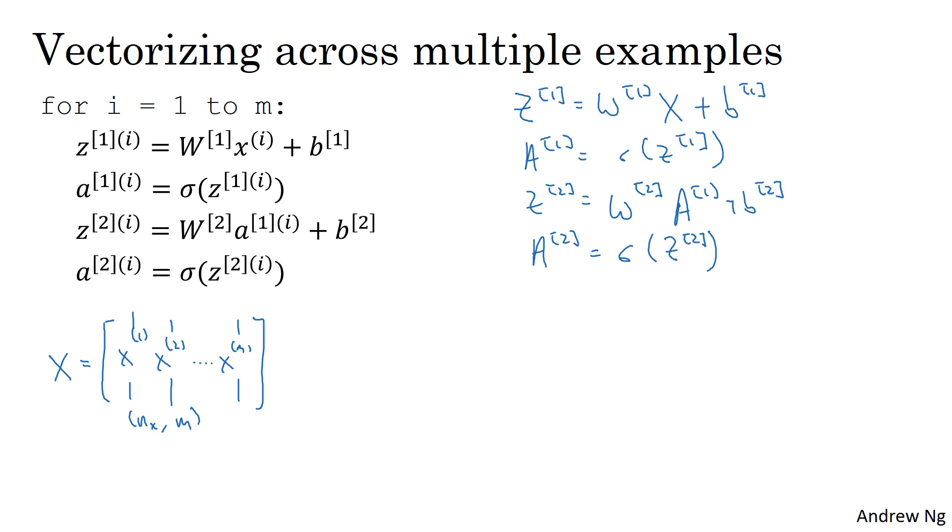So if you want, the analogy is that we went from lowercase vector x's to this capital case x matrix by stacking up the lowercase x's in different columns. If you do the same thing for the Z's, so for example, if you take Z1, 1, Z1, 2, and so on, and these are all column vectors up to Z1m, right? So that's this first quantity, but all m of them, and stack them in columns, then this gives you the matrix Z1.